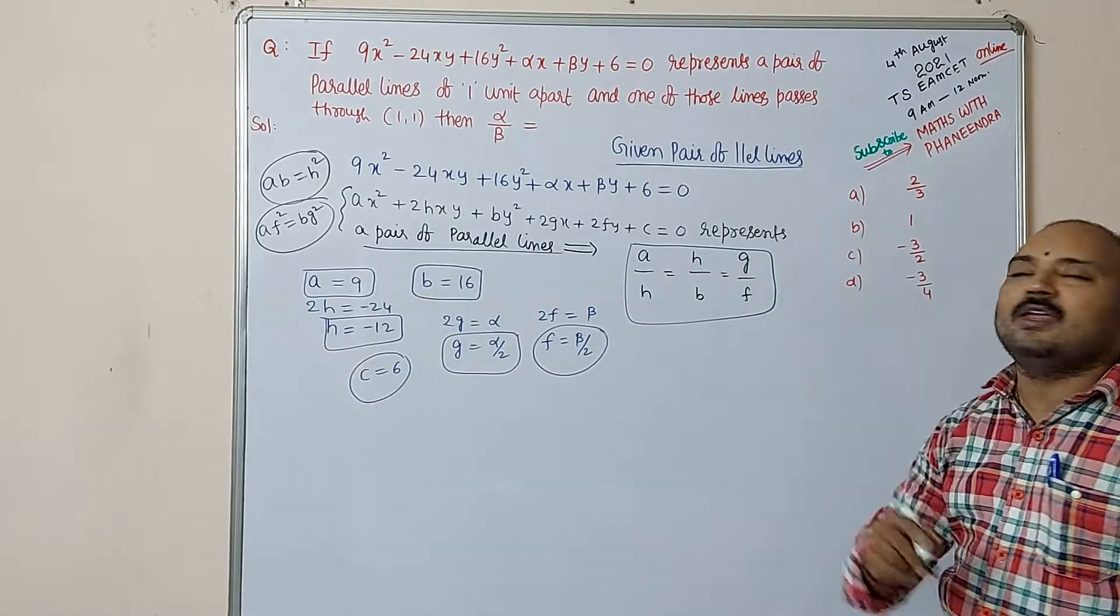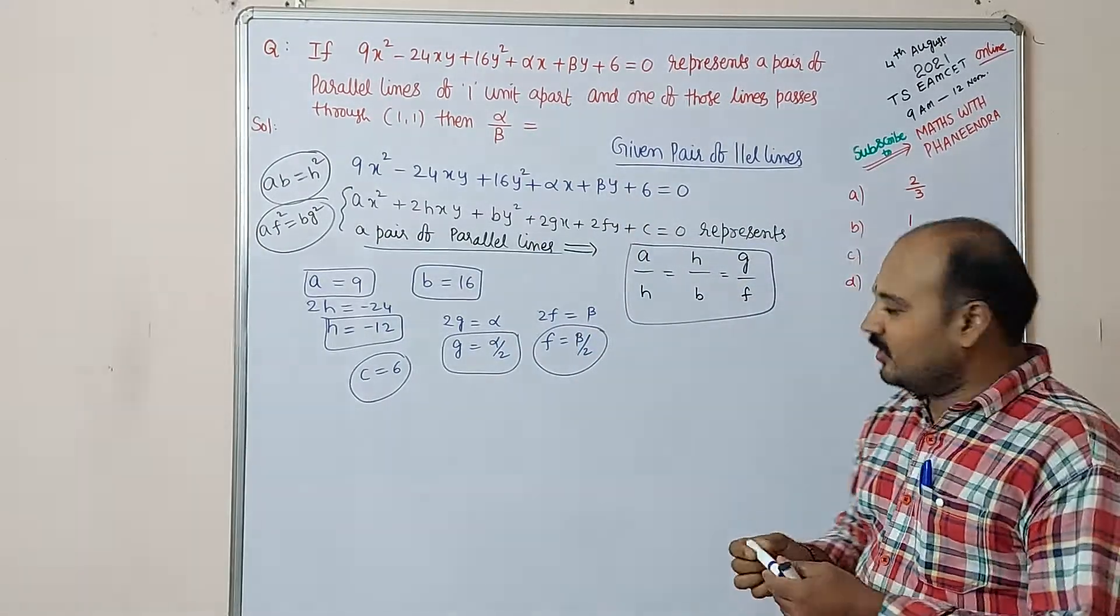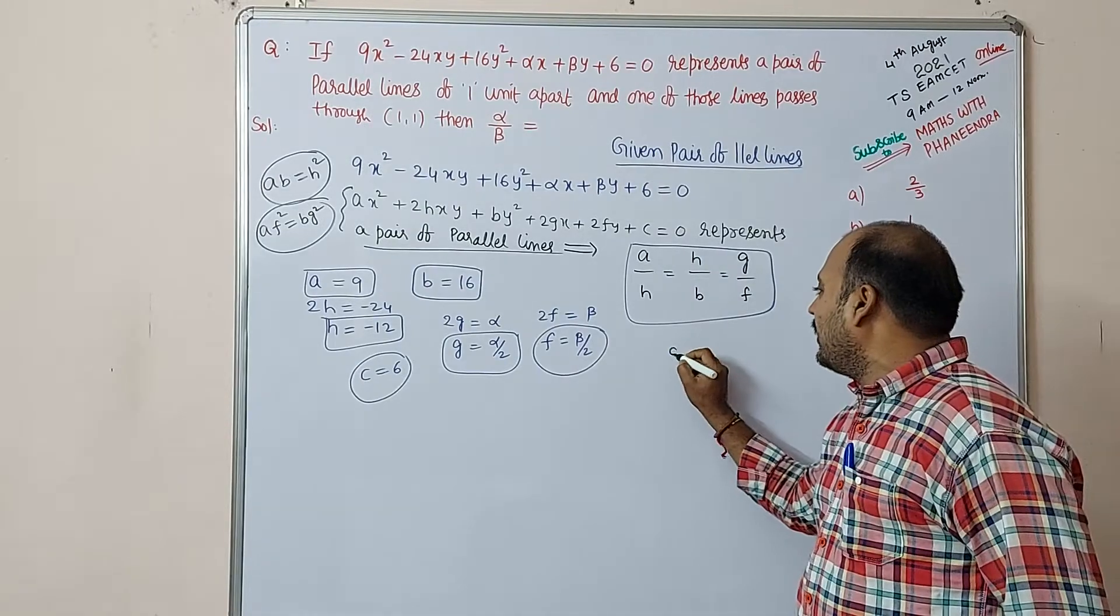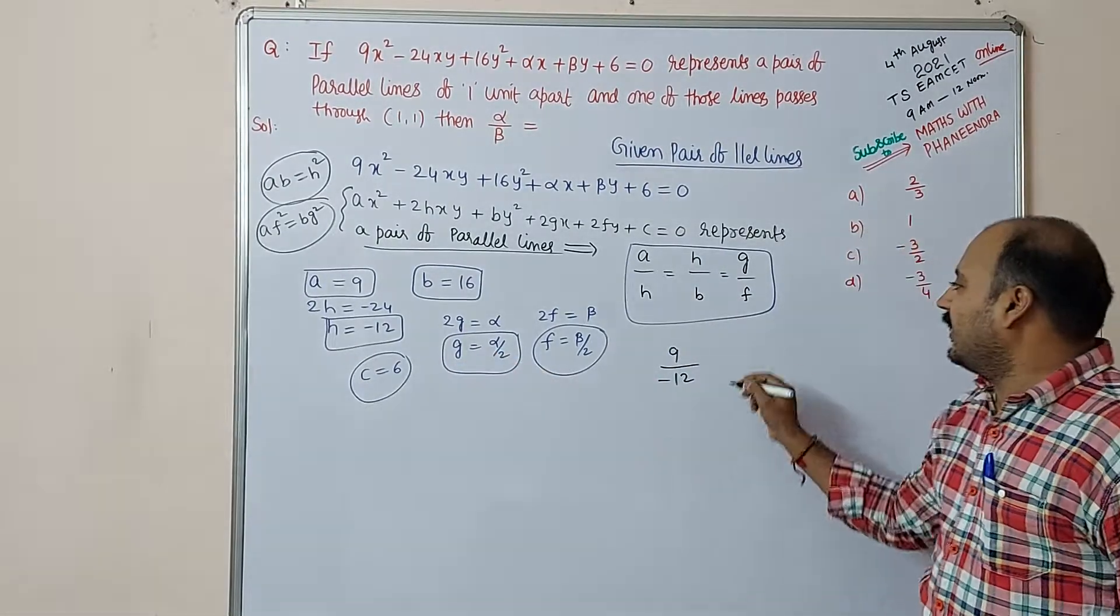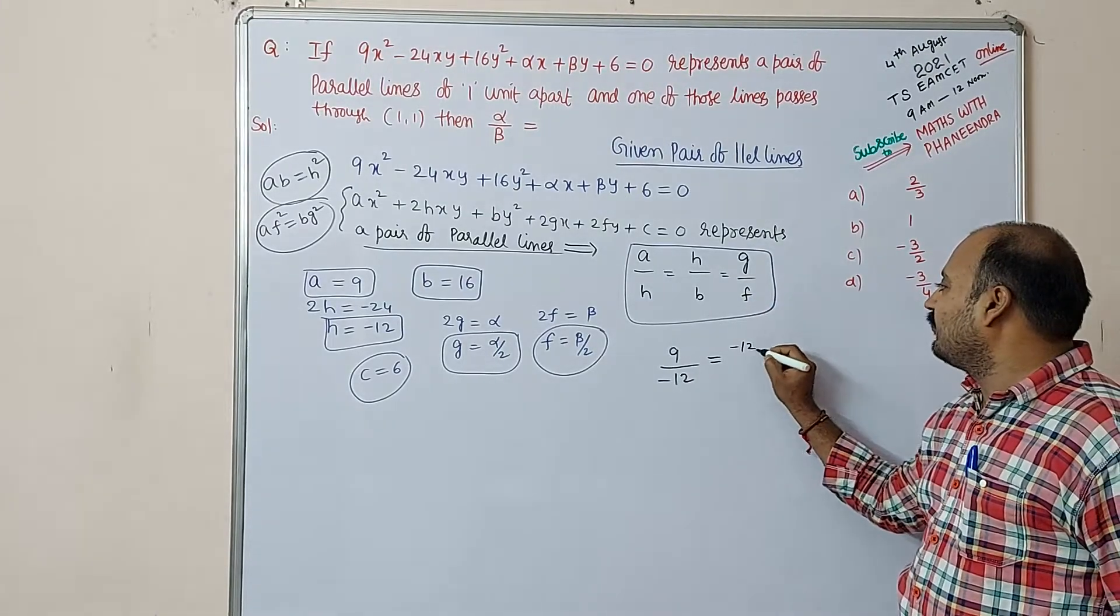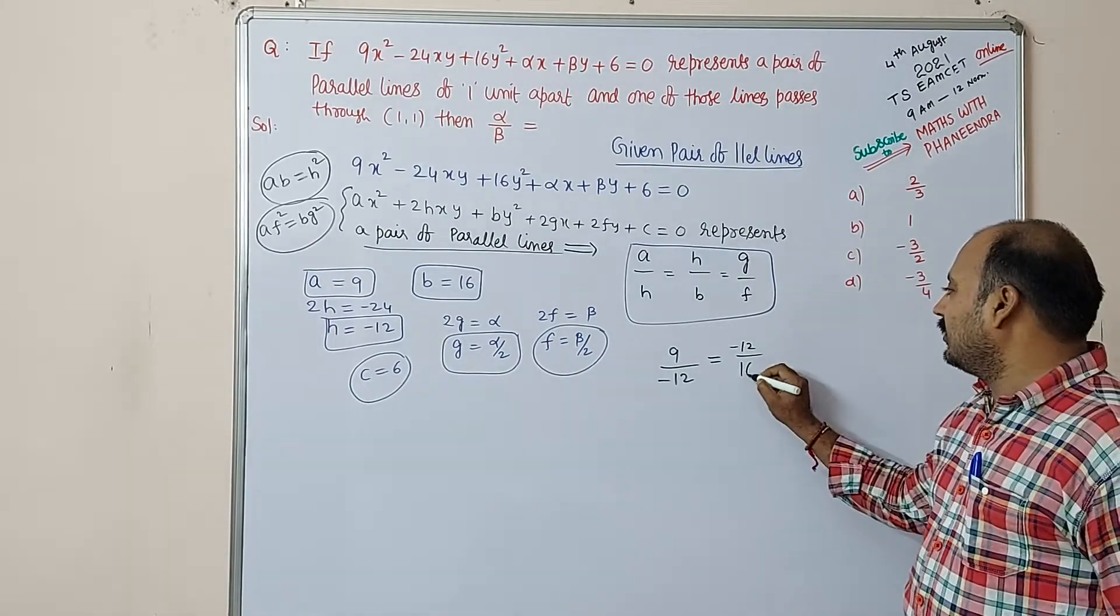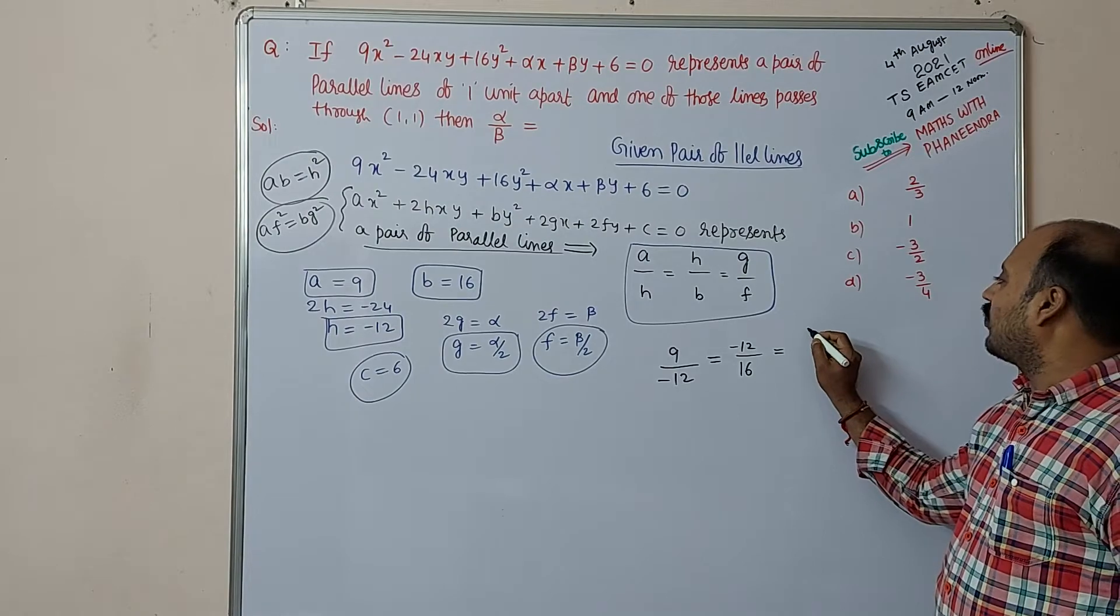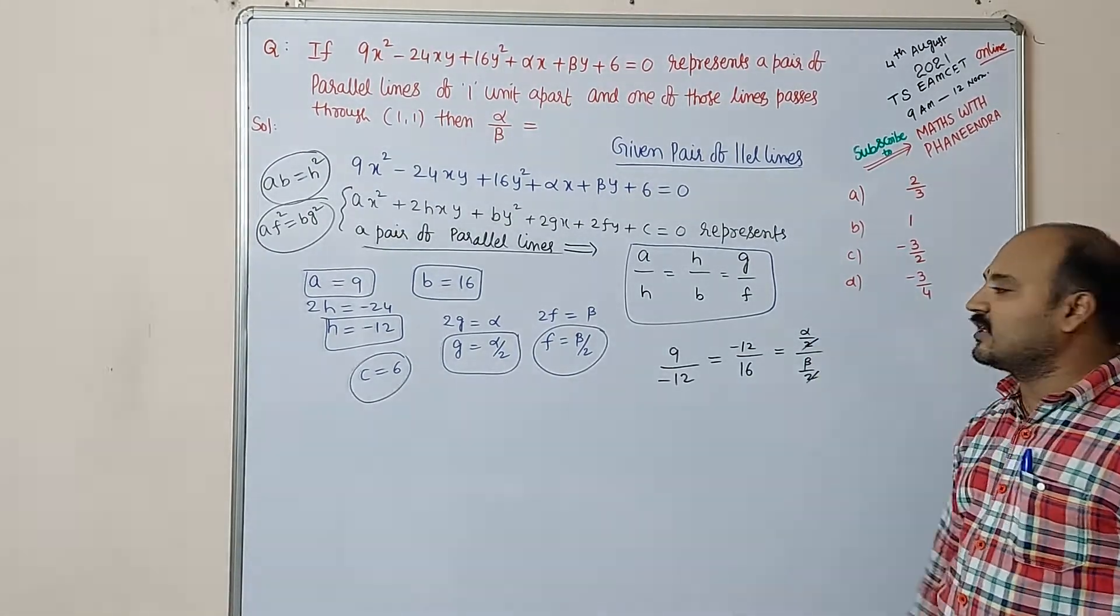So instead of writing these two, we are writing a/h = h/b = g/f. Substitute the respective values and get the answer α/β. So what is a/h? a value 9 by h value -12 = h/b, h value -12 by b value 16, which is equal to g value α/2 by f value β/2. So here 2, 2 get cancelled.